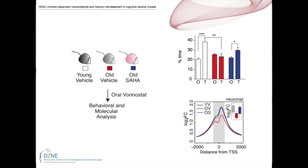What we've done here is taken a model of cognitive decline, namely old animals, and treated them with vehicle or with SAHA. One of the first observations is that animals treated with vehicle are impaired in a particular task, the Morris Water Maze, but when given SAHA they are able to perform this task almost as efficiently as their young counterparts. In terms of histone H4 lysine 12 acetylation, we also observed a reinstatement of acetylation levels which are reduced in the vehicle-treated animals.